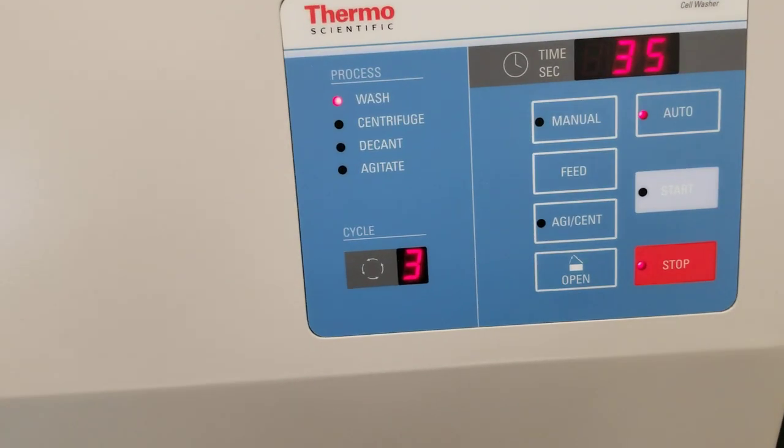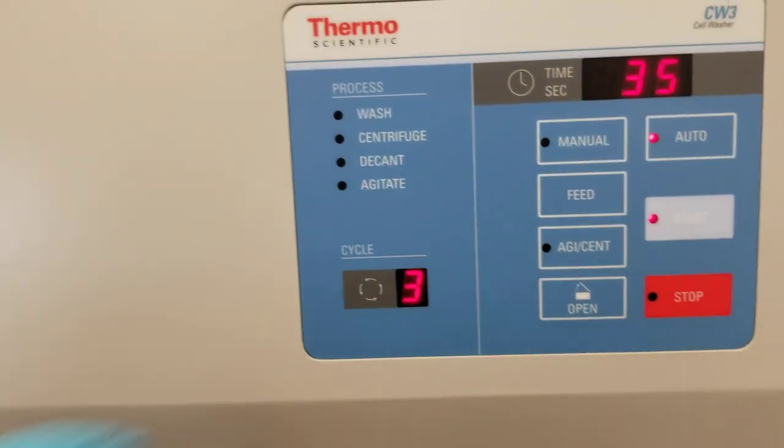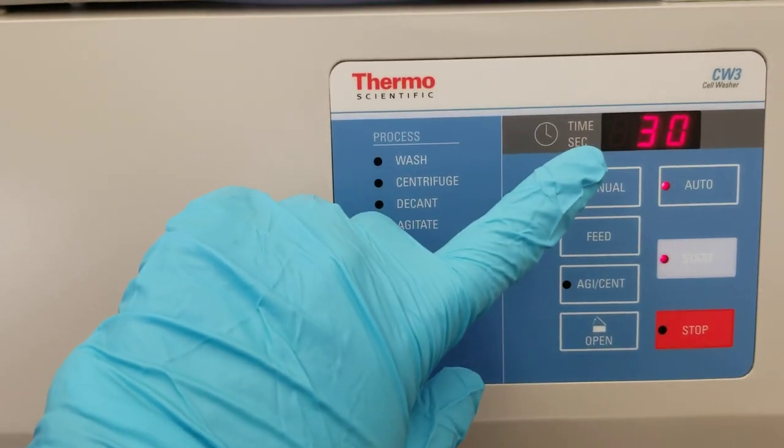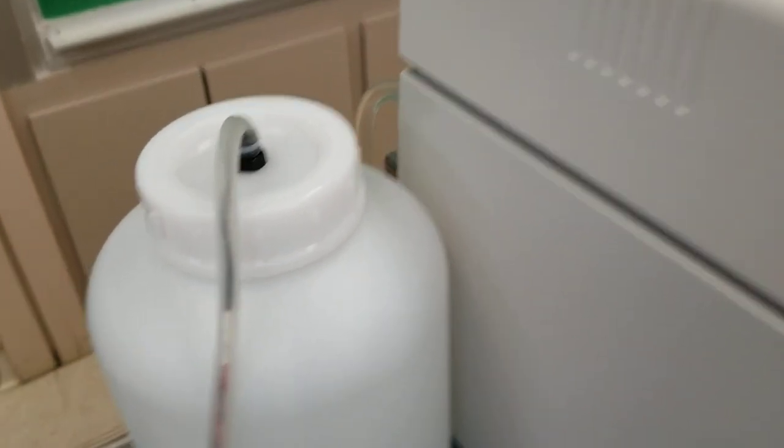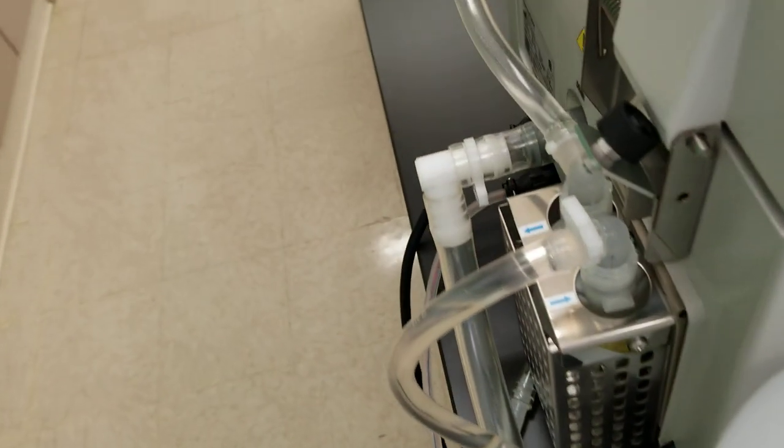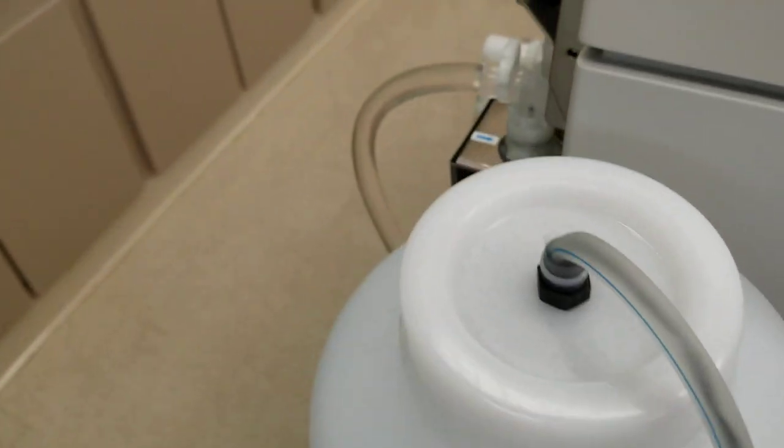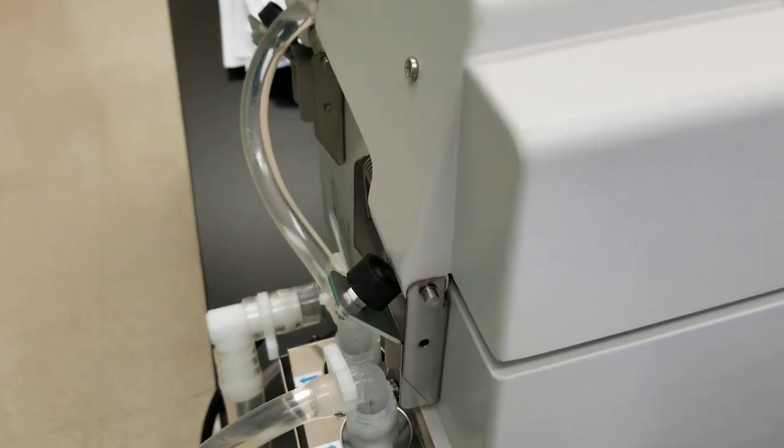So in order to get it started, we need to press this light blue. Okay. Now it's showing it's washing and it's telling you how much time it's going to take to finish washing. You can hear the saline coming out from here and going into the cell washer. Okay. And before you do any of this, you want to make sure that there aren't any bubbles in the tubing because then it's not going to be done as well. It's not going to be very accurate.